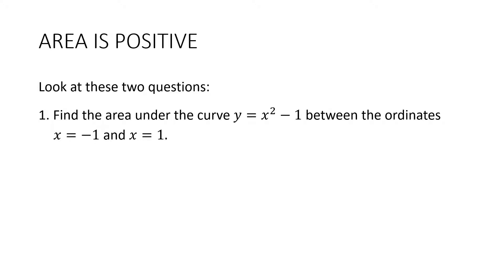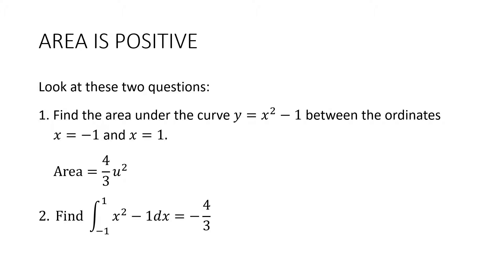Consider two similar questions. Find the area under y equals x squared minus 1 between x equals negative 1 and x equals 1 — the answer is 4 thirds units squared. But find the integral between negative 1 and 1 of x squared minus 1 dx — the answer is negative 4 thirds, with no units squared. The distinction is in how they phrase it: area is a physical quantity that can't be negative, while evaluating an integral is an algebraic exercise.